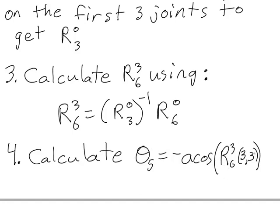Remember that I already have matrix R36 because I got that from step three of the procedure. So all that this step requires is to get the element of this matrix that is in the third row and the third column, calculate the arc cosine of it and take the negative, and then you'll have theta five.